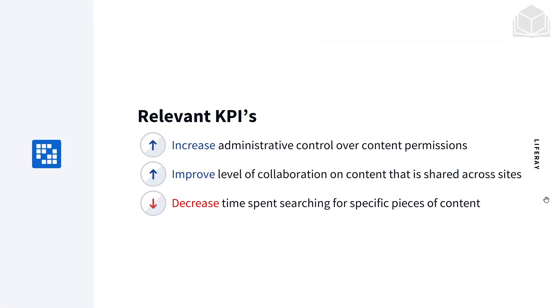The way we will track success is with the following KPIs: we want to increase administrative control over content permissions, improve the level of collaboration on content that is shared across sites, and decrease time spent searching for specific pieces of content.